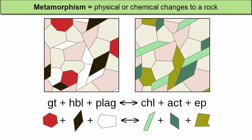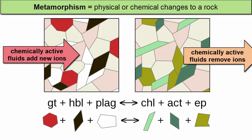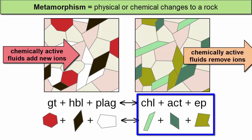In addition to physical changes, there are chemical changes that can result from added heat. As the atoms increase their energy and migrate, they can react with atoms in nearby minerals and create new minerals that are more stable at the new temperatures and pressures. If chemically active fluids are present, these fluids can bring in new atoms and make those available during the process — they can also take some away. If the new minerals that form are stable under narrow temperatures and pressures, they become valuable clues to the story of the rock. Such minerals are referred to as index minerals.